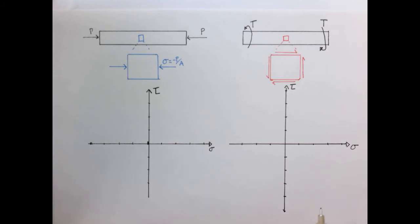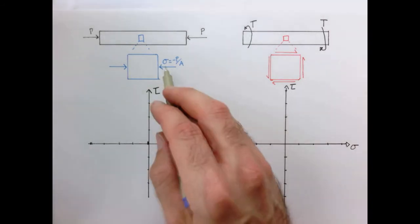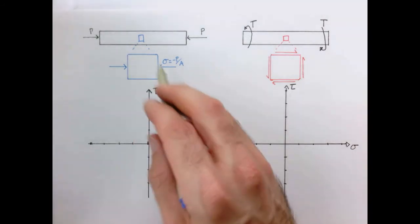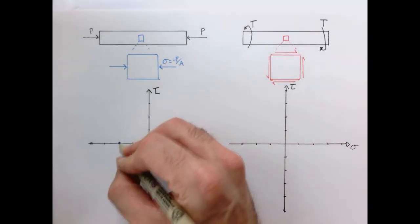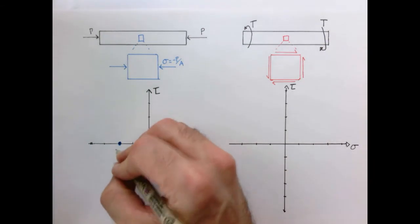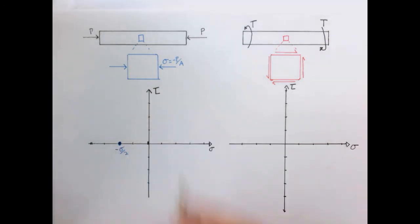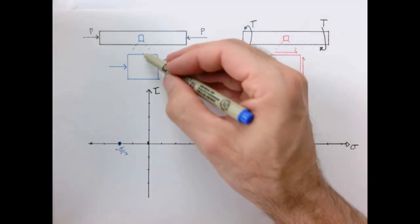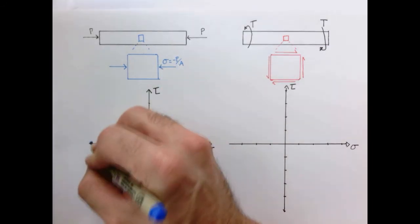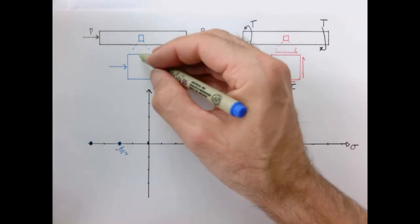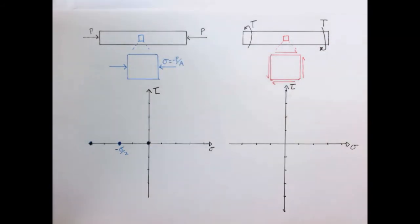So the center of the circle is given by the average of the normal stress of these two faces. So here it's just going to be sigma over two, but the negative direction. So let's just call that sigma over two here. Now I need to plot the state of stress on these two faces.